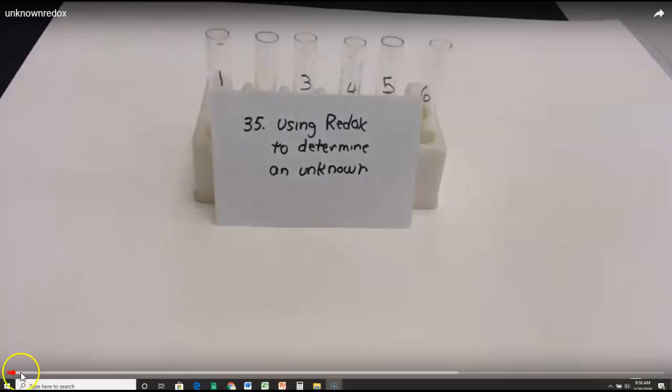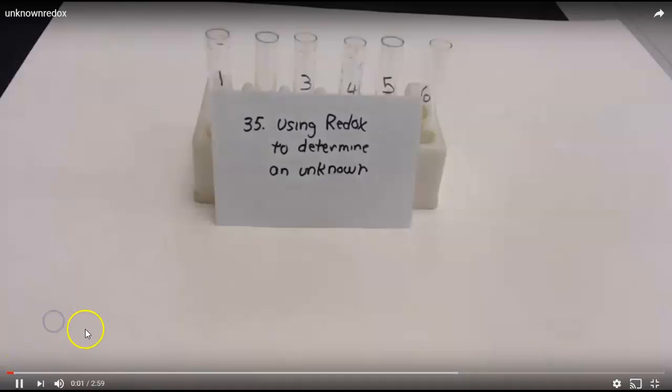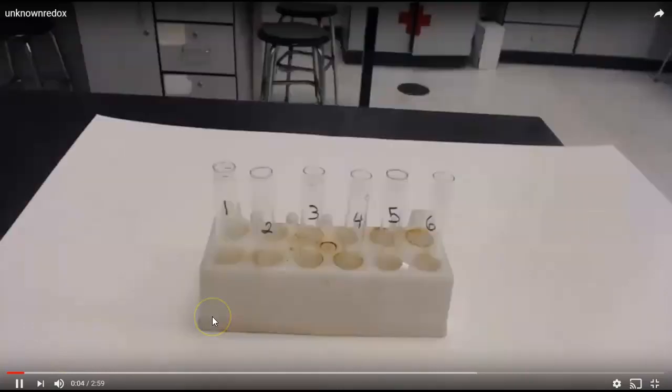So, let's take a look at the lab itself. So, here we go. We're doing lab number 35 using redox to determine an unknown. So, what you see we've got here is one, two, three, four, five, six test tubes all day. And eventually, I will start the lab. There we go. Now we're starting the lab.